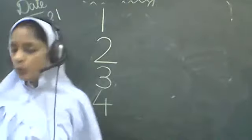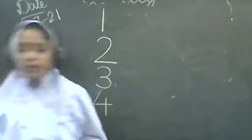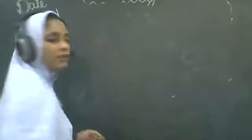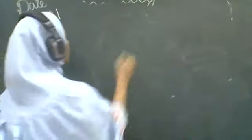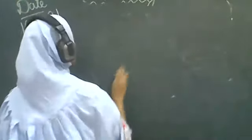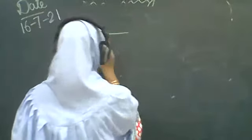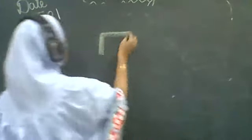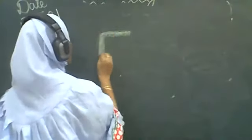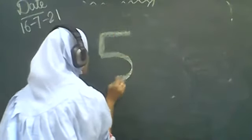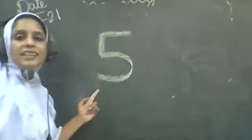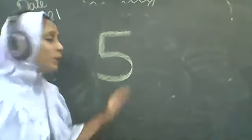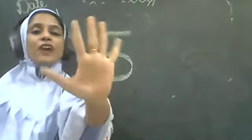Today we are going to learn a new number. So kids, let's see which number. One sleeping line, standing line and inverted C makes number five. Five. Which number is this? Five.